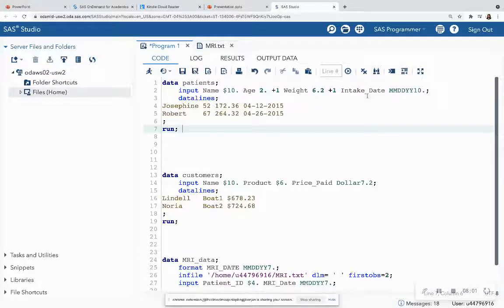And then intake date, I have that MMDDYY10. So once again, if I count 1, 2, 3, 4, 5, 6, 7, 8, 9, 10. So that date is of a complete width of 10.